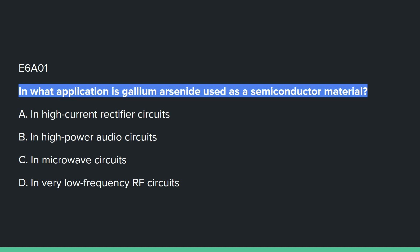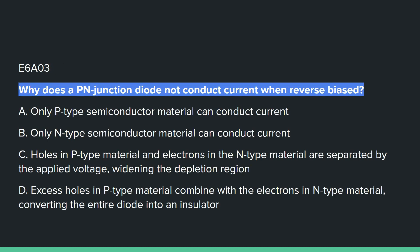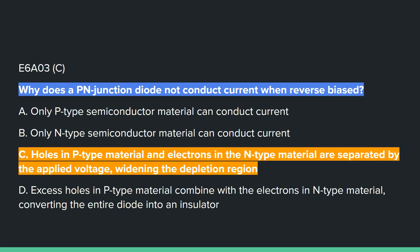E6A01: In what application is gallium arsenide used as a semiconductor material? Answer is C, in microwave circuits. E6A02: Which of the following semiconductor materials contains excess free electrons? A, N-type. E6A03: Why does a PN junction diode not conduct electric current when reverse biased? C, holes in P-type material and electrons in the N-type material are separated by the applied voltage, widening the depletion region.